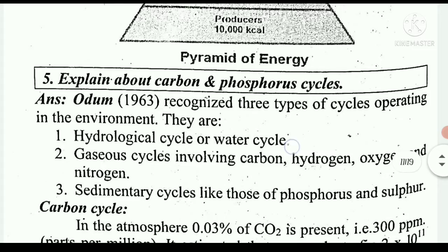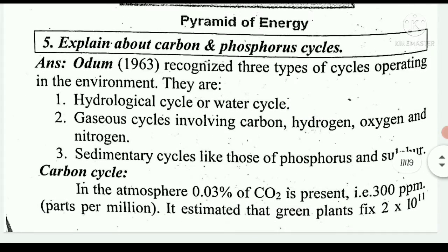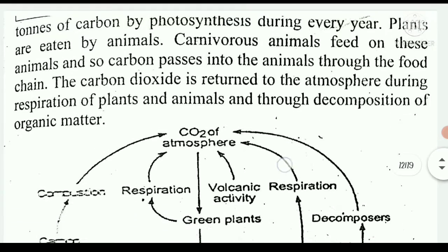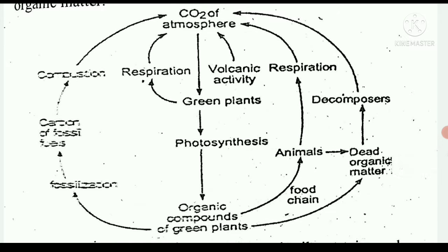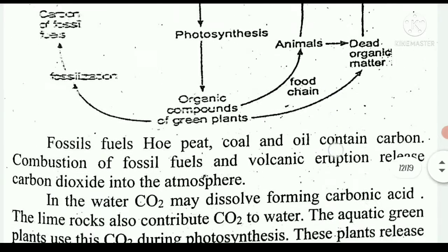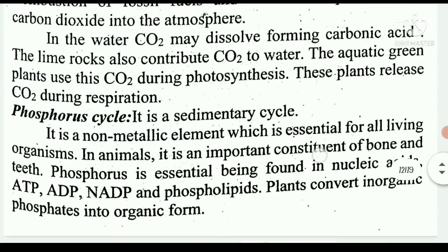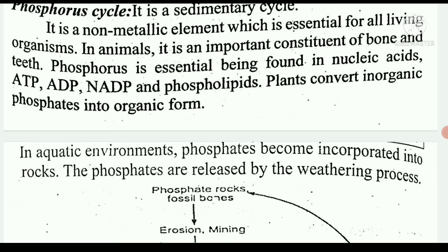And then explain about carbon and phosphorus cycle. So first here the carbon cycle is there. The carbon cycle basically starts from compounds and the final product is carbon dioxide. So we have photosynthesis, green plants, organic compounds of green plants, then animals eat from those organic compounds. After eating, animals release CO2 through respiration. Or when animals die, dead organic matter decomposes and CO2 is released. So the final product is CO2. And then the phosphorus cycle - the final product is phosphorus.